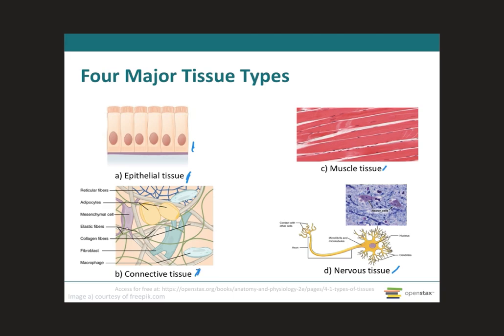Moving on to connective tissue, this tissue is the one that will protect and support the body and all of its organs. A few of the functions of this tissue is that it will bind organs together through fibers — the reticular fiber, elastic fibers, and collagen fibers. It will store energy reserves as fat, as seen in the adipocytes, which are fat cells. And it helps provide the body with immunity to disease-causing organisms due to the different immunological cells, such as the macrophage, located in this tissue.